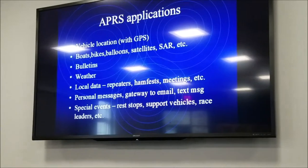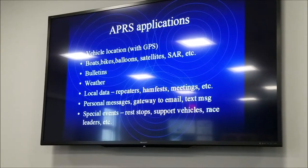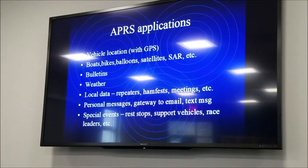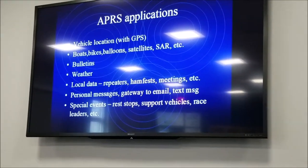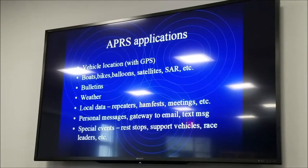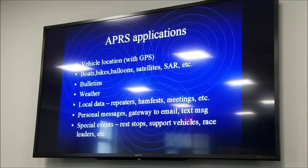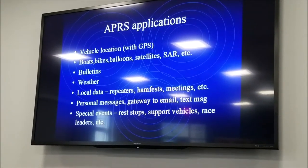Some of the things you can do with APRS: vehicle location is the popular one — anything that moves around, boats, bikes, balloons, satellites, search and rescue. Bulletins, weather, local data about repeaters and ham fest meetings. Personal messages — you can send messages directly to other stations. There are gateways to email and text so you can get email and text from your portable or mobile. Special events is one of my main uses for ARES — we can show rest stops, support vehicles, and race leaders on the map.